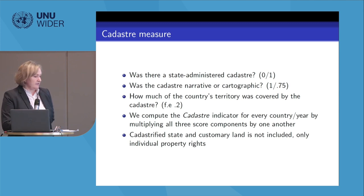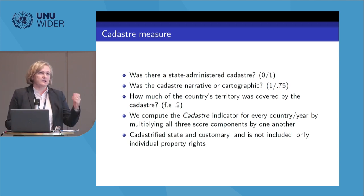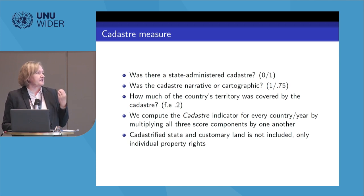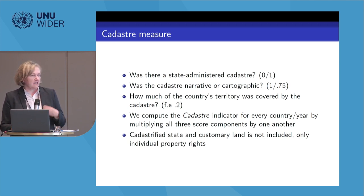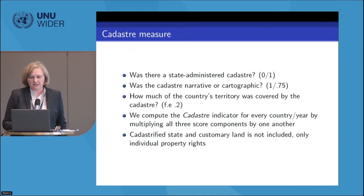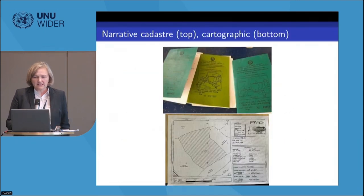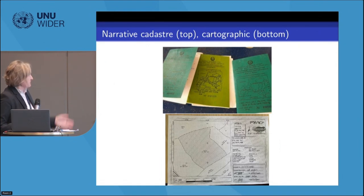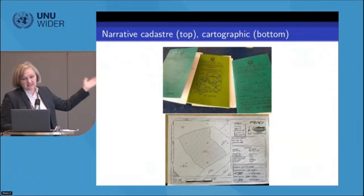By design, customary or neo-customary lands are not included. For this specific dataset, we also excluded cadastrified state land, because we are talking about individuals and their incentives, so it would be strange to include land that the state itself uses. Narrative cadastro is simply a description of a land parcel — for example, 'runs from that big rock to that big tree' — whereas cartographic cadastro is a map-based representation with relevant information such as land quality.